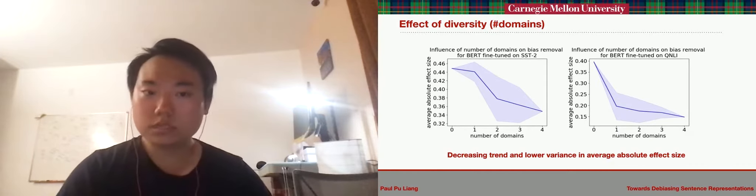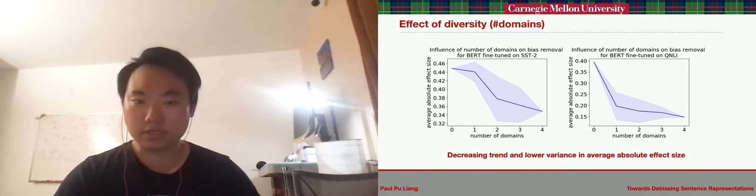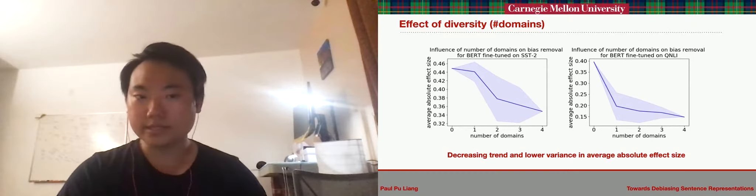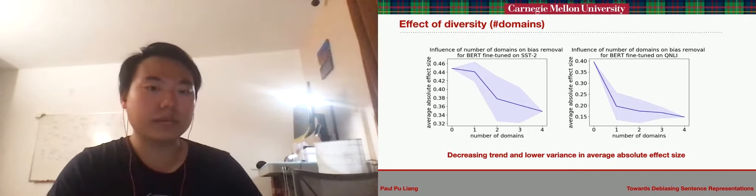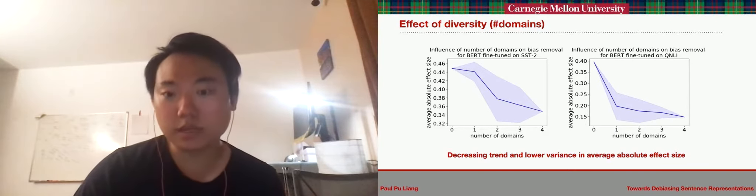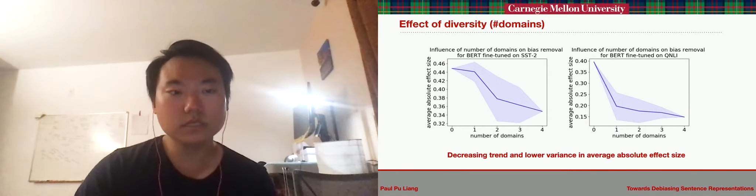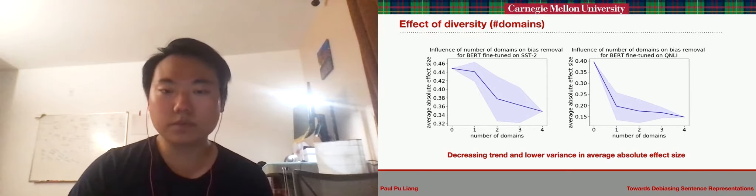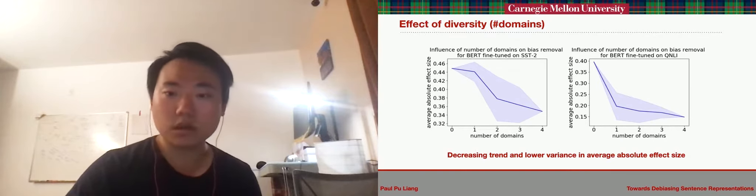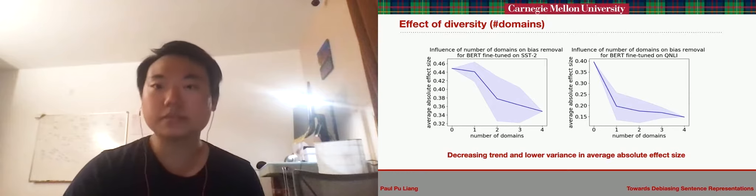Again, we draw similar observations. There is a decreasing trend in effect size as templates are drawn from more domains, and using a larger number of domains reduces the variance in effect size and improves stability of the algorithm. These two controlled experiments allow us to conclude that it is important to use a large variety of templates across different domains to estimate the bias subspace.